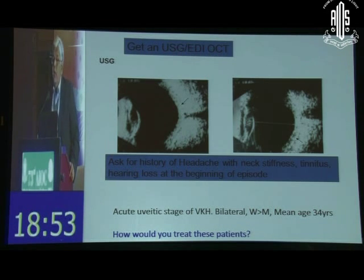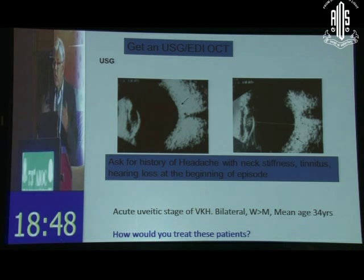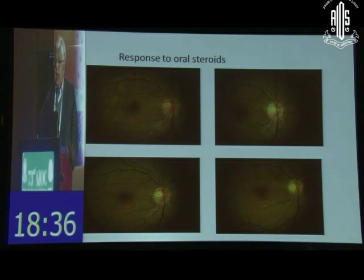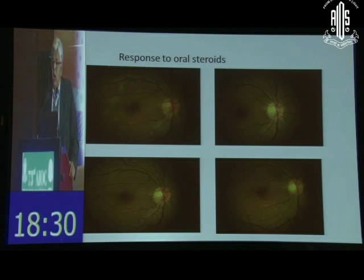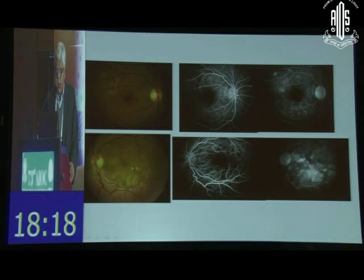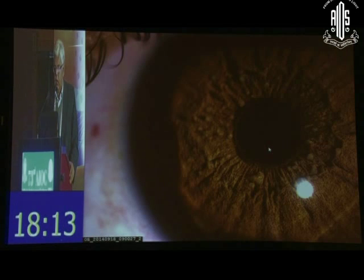VKH may present with multifocal areas of serous retinal detachment and may look unilateral to begin with, but it is always a bilateral disease — there could be a gap of a few days between the two eyes. These patients respond very nicely to corticosteroids; typically we give intravenous corticosteroids for three to five days and then the inflammation settles and they regain normal vision. These patients need to be on immunosuppressive therapy for a long time to prevent recurrences. In the inadequately treated patient you can see multifocal lesions in the other eye and later subretinal fluid accumulation.